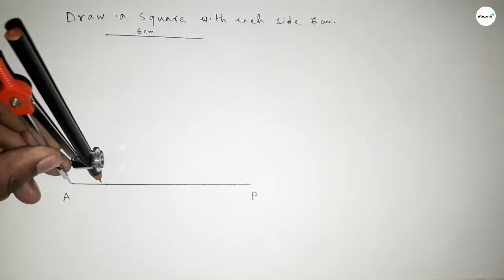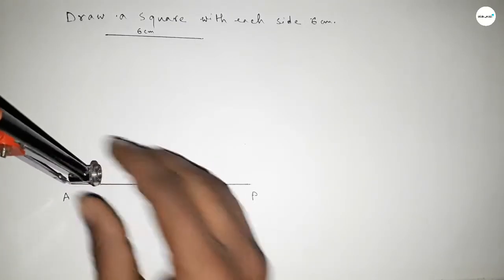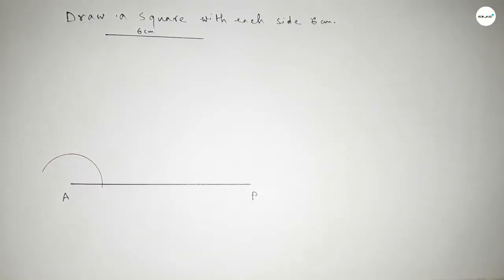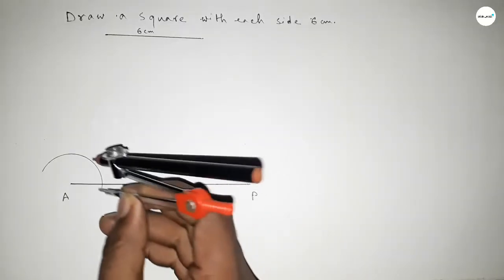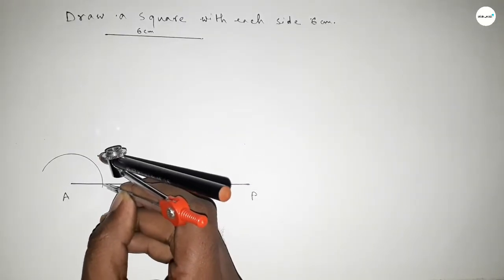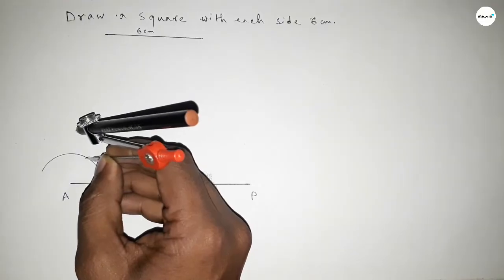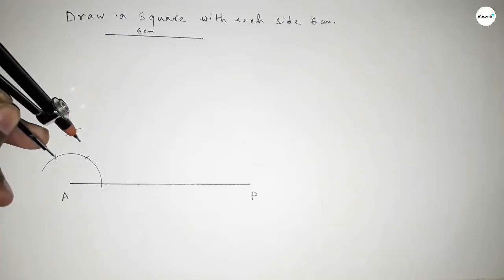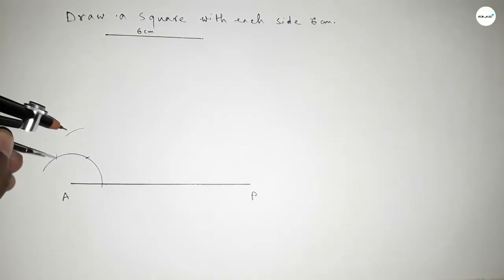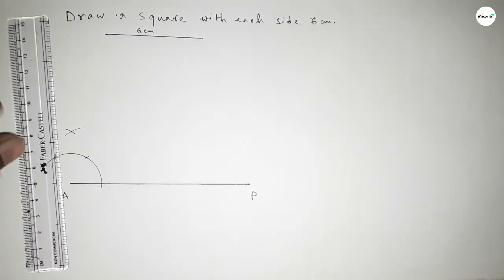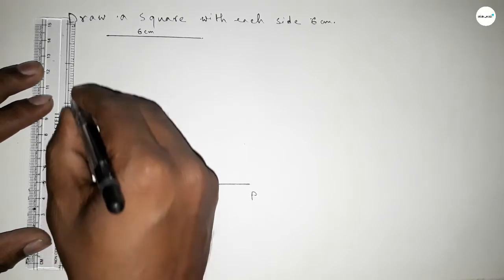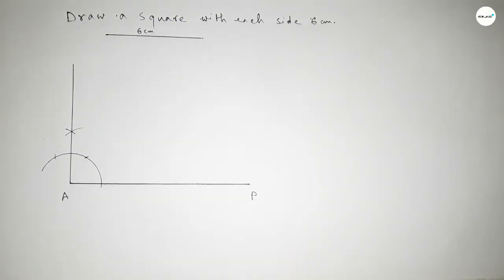Next we have to draw a 90 degree angle on point A. Taking any length by compass and drawing an arc, then with the same length putting the compass and cutting here, and again putting the compass and cutting here. Drawing an arc with the same length — both curves intersect at a point. Joining this to get a 90 degree angle. So we got a 90 degree angle.